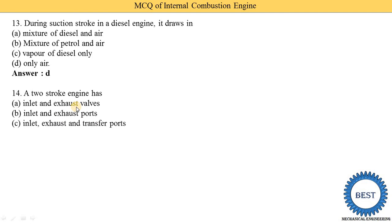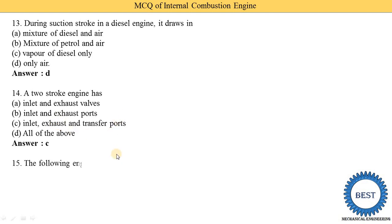Next MCQ: a two-stroke engine has — option A: inlet and exhaust valve, option B: inlet and exhaust port, option C: inlet, exhaust, and transfer port, option D: all of the above. In a four-stroke engine, valves are used; in a two-stroke engine, ports are used. There are three ports: inlet port, exhaust port, and transfer port. So option C is the correct answer.